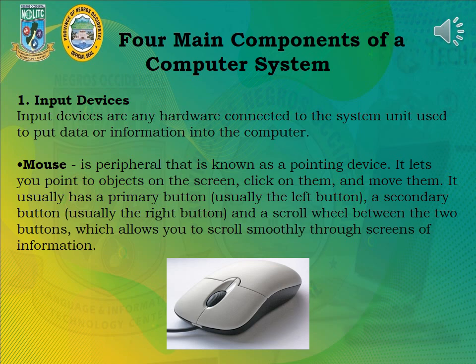The mouse usually has a primary button — usually the left button — a secondary button — usually the right button — and a scroll wheel between the two buttons, which allows you to scroll smoothly through screens of information.